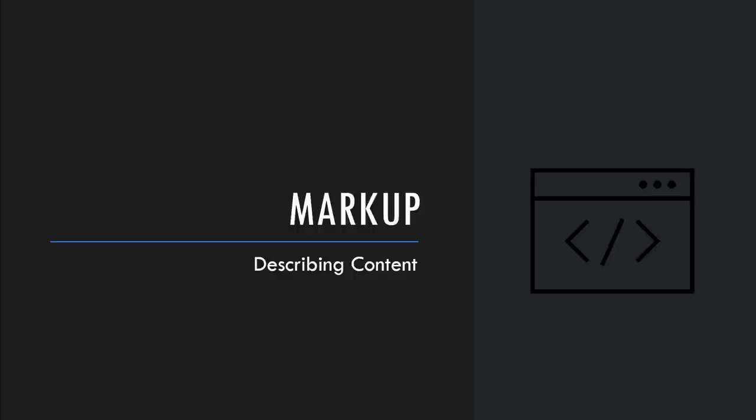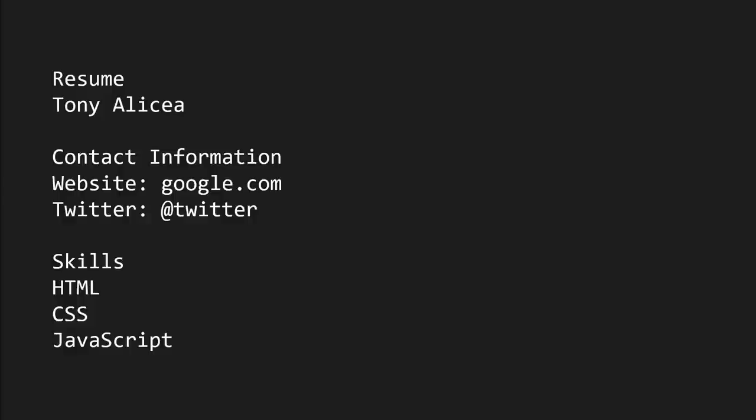Let's talk about the M in HTML - let's talk about markup. We already introduced the idea of a text document, a resume. If the resume was printed and I wanted to clarify the contents of the document, I might write a note on the document. I'm marking up the document. And that's where the idea comes from - literally the marks that an editor might make on a document to provide instructions or clarifications. But how do we mark up a document in a way that a computer can read?